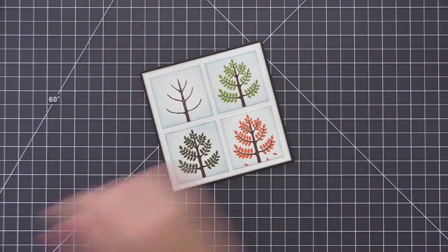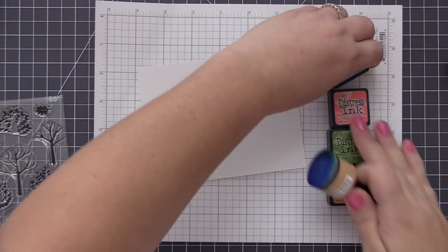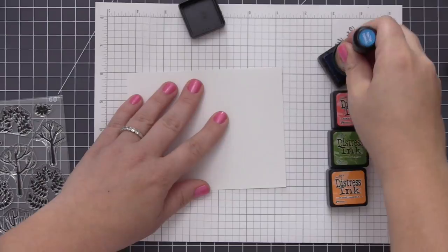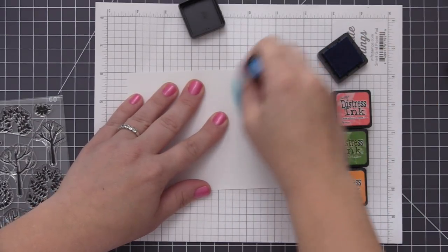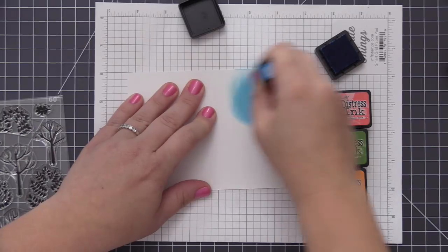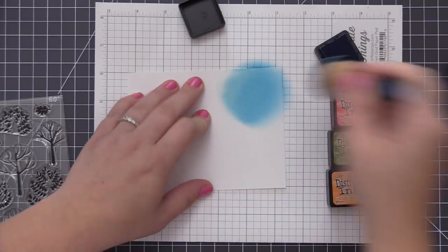Now moving on I wanted to create another card with kind of the same idea but rather than have the trees be different colors I wanted to have one tree and have four squares that represented the seasons just by the color that I have them. For this one here I'm taking some distress ink colors and I'm adding some ink detail to a white cardstock panel. I have some salty ocean for the winter square.